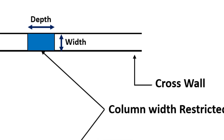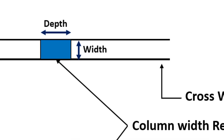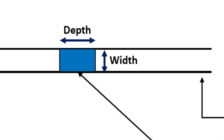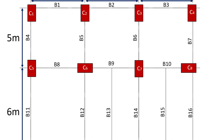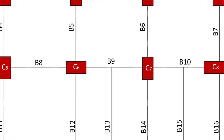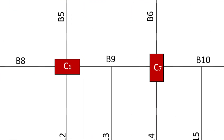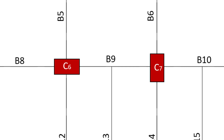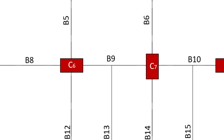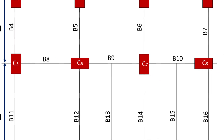In such cases, the required cross section can be achieved by increasing the depth of the column. This may create problems when orienting the columns, and to avoid this, the following points shall be noted.